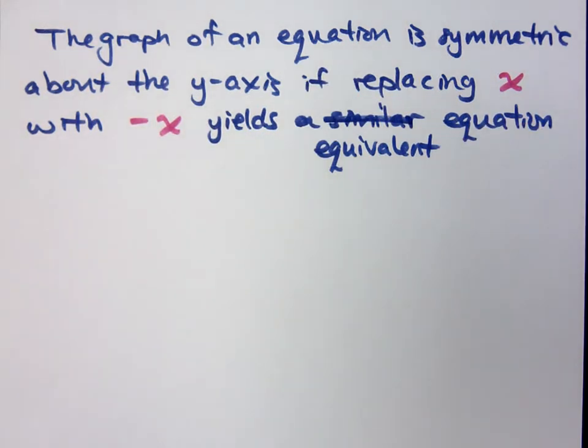So the way you can see if something has symmetry about the y-axis, if all you have is the equation, if you replace x with negative x and it still is the same thing, then that's symmetry about the y-axis.